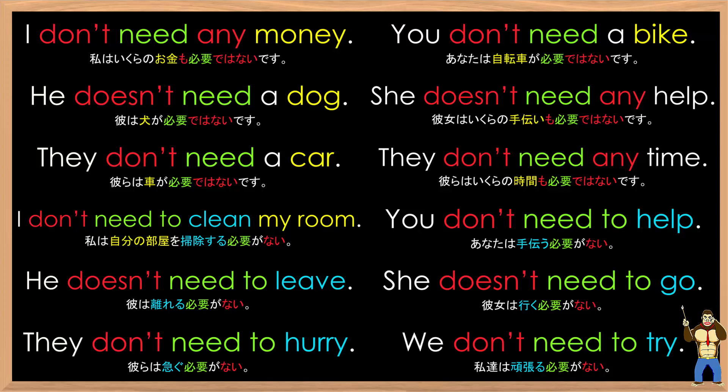Let's try that at a normal pace: I don't need any money. You don't need a bike. He doesn't need a dog. She doesn't need any help. They don't need a car. They don't need any time. I don't need to clean my room. You don't need to help. He doesn't need to leave. She doesn't need to go. They don't need to hurry. We don't need to try.